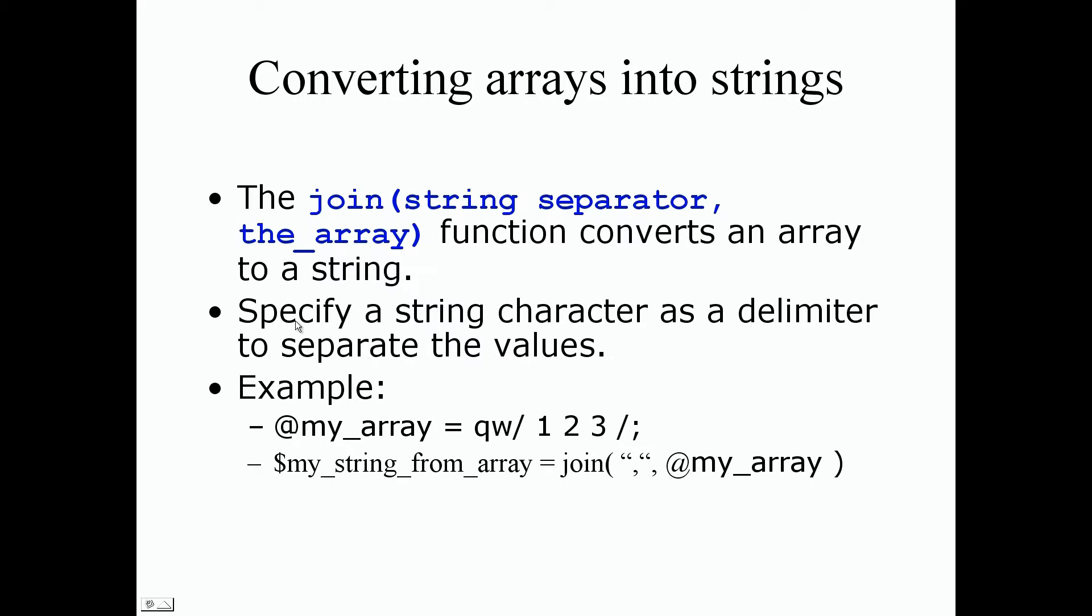For example, we create and declare our array. Our shortcut values use the qw operator. This time I use forward slashes at the beginning and end instead of parentheses. We declare some values separated by spaces: one, two, three.